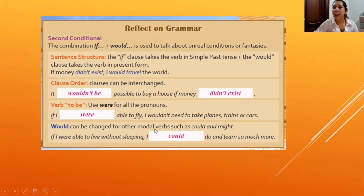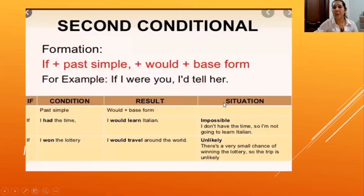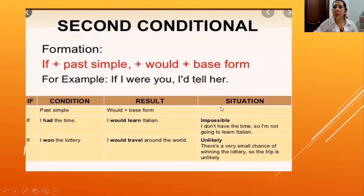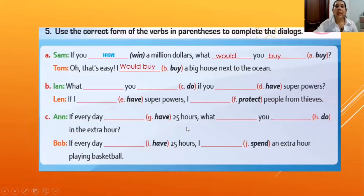'Could' can be changed for other modals — not only 'could,' but also 'would.' For example: if we were able to live with less sleep, I would earn so much more. The teacher presents a grammar chart to practice exercises with students as a modeling teaching strategy, explaining the conditional clause with the condition and result. The second conditional is used to talk about impossible or unlikely situations.